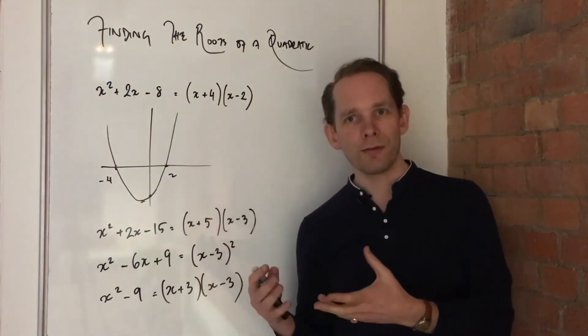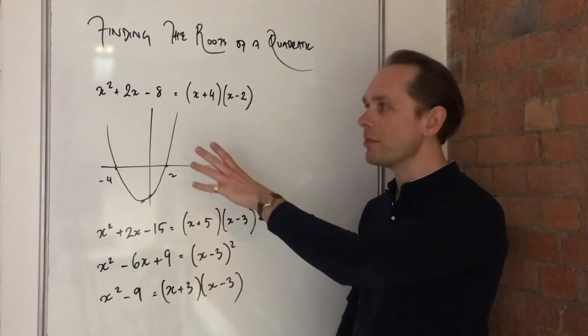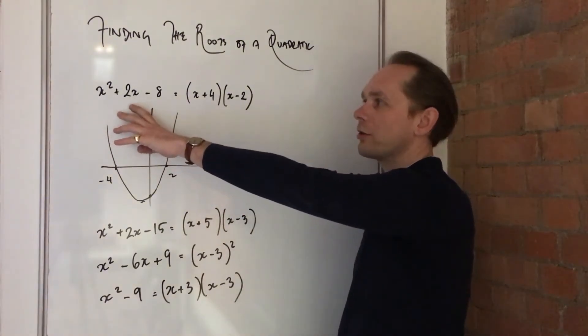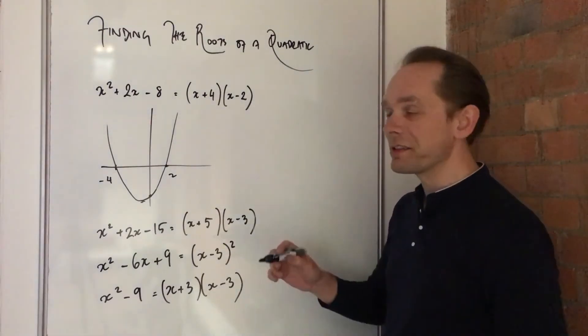You can find it by drawing a perfectly accurate graph, but that's hard. It's much easier in most cases to factorise a quadratic and make it equal to zero.